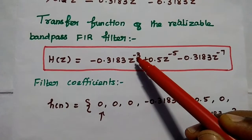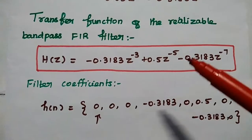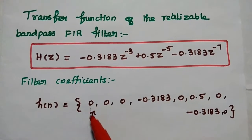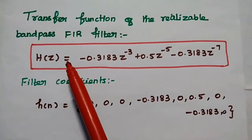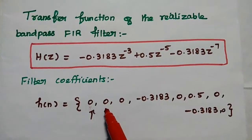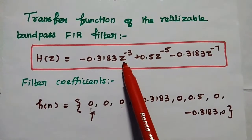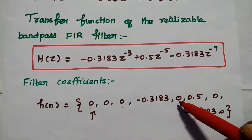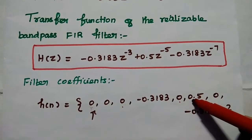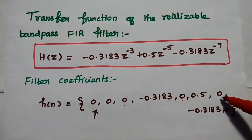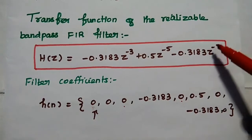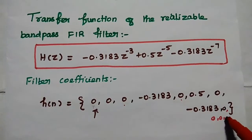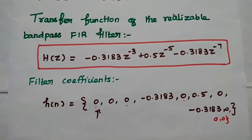This is the final transfer function of the realizable band pass FIR filter. From this we can write the filter coefficients starting from z^0: the coefficients at n=0,1,2 are 0; at n=3 it is -0.3183; at n=4 it is 0; at n=5 it is 0.5; at n=6 it is 0; at n=7 it is -0.3183; and at n=8,9,10 the values are 0. This completes the filter design.